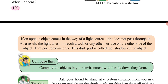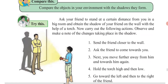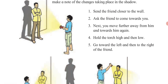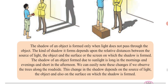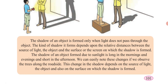Always remember: the shadow of an object is always cast opposite to the source of light. When an object is near to the wall, the shadow is small, but when it is far away, the shadow is much bigger. The kind of shadow formed depends upon the relative distance — how far or how near the object is from the wall determines how big the shadow will be.